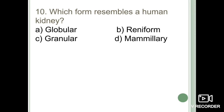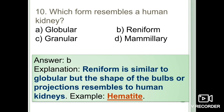Next question: which form resembles a human kidney? The reniform structure is similar to globular, but the shape of the bulbs or projections resembles the human kidney. The best example is hematite. The correct option is option B: reniform form.